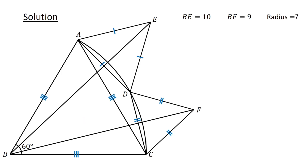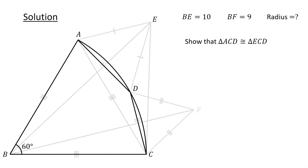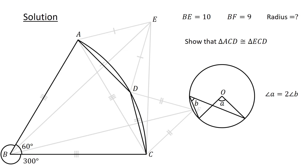Next, connect C to E and then consider triangles ACD and ECD. Let us show that these triangles are congruent. To do this, consider the minor sector and the line segments AD and CD. The central angle of the major sector is 360 degrees minus 60 degrees, or 300 degrees. Recall that an angle at the center is twice the angle at the circumference. Hence, angle ADC equals 300 degrees divided by 2, or 150 degrees.